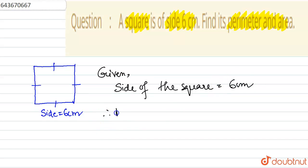Therefore perimeter of the square is equal to the sum of all the sides. So sum of all the sides means this side plus this side plus this side plus this side. If you add all the sides you get the perimeter of any figure.